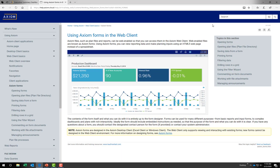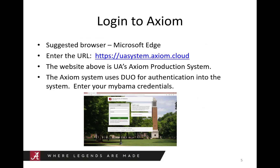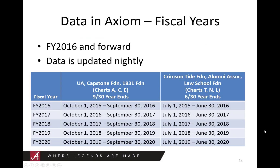Now let's move to a discussion of the data contained in Axiom. The data in Axiom begins with fiscal year 2016. There is currently no inception-to-date reporting in Axiom for grants or projects that span multiple years — data is only on a fiscal year basis at this time. Data is imported nightly from Banner into Axiom, so any activity in Banner for the current day will not be included in your reports or dashboards, since the last nightly import is what is included in the Axiom data.